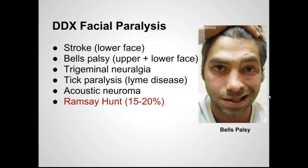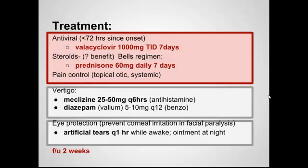With a patient with facial paralysis, it's always good to go through a differential to make sure you're not missing something more serious. Obviously, stroke is a big concern, but that would involve more of the lower face. In Ramsey-Hunt and Bell's palsy, you see upper and lower facial paralysis, which is reassuring. Sometimes trigeminal neuralgia can cause facial paralysis, as can Lyme disease, classic tick paralysis, or acoustic neuromas. And again, we have our player: Ramsey-Hunt.